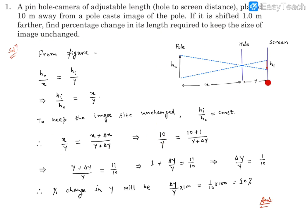And x plus delta x is the total separation between the hole and pole later on, that is 10 plus 1. And the distance, let's say moved, is delta y, so that will become y plus delta y.